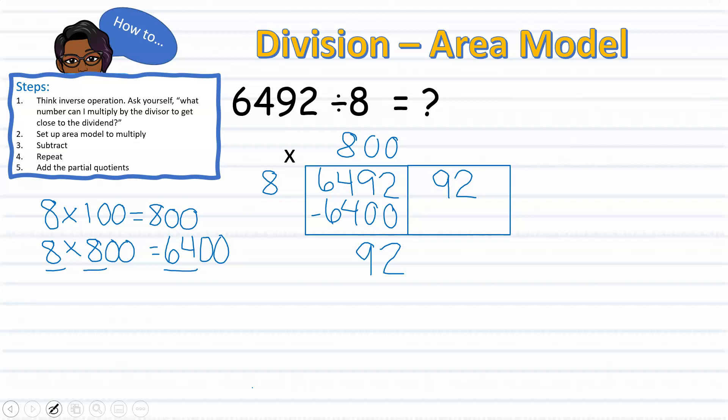So I will think to myself, what number can I multiply 8 by that will get me closest to 92? Since I know that 8 times 10 equals 80, I can now subtract 80 from 92, leaving me with 12. And since I know that 12 is greater than my divisor, I know that more division is needed.